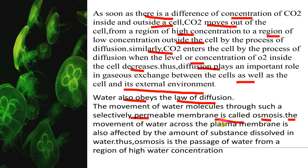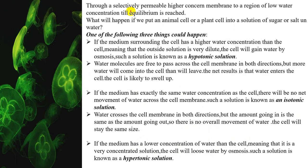The movement of water across the plasma membrane is also affected by the amount of substance dissolved in water. Osmosis is the passage of water from a region of higher water concentration through a selectively permeable membrane to a region of lower water concentration, until equilibrium is reached. What will happen if we put an animal cell or plant cell into a solution of sugar or salt water?